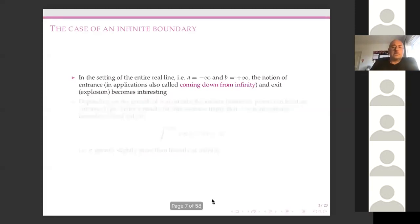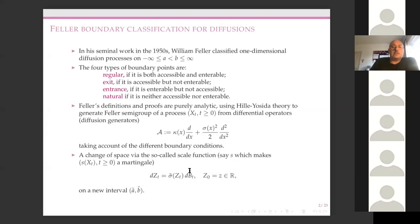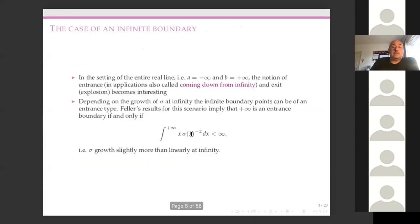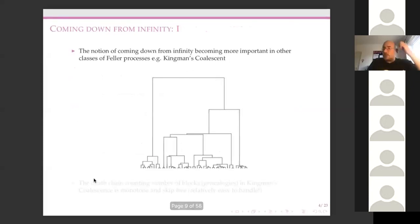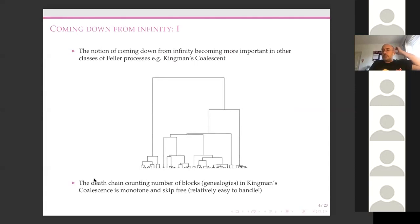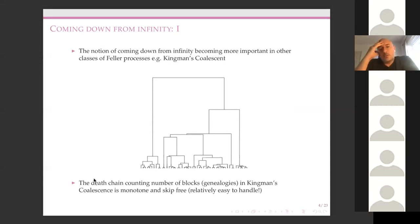Just to remind you, sigma appeared in the original SDE, and this would be the new sigma in the transformed SDE. The sigma is growing slightly more than linear. So this notion of coming down from infinity is more commonly called that way recently, because we see it appearing in other types of stochastic processes — differently from the Feller situation — in stochastic processes which undergo jumps, i.e., path discontinuities.